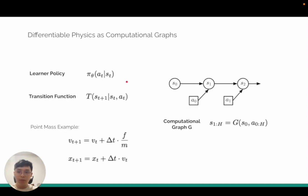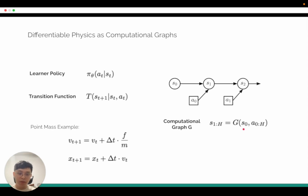Let's define the learner policy with pi theta which takes in st and outputs action at. The transition function t takes in current state st, action at and then outputs the next state st plus 1. Using the initial state and actions, we can use this transition function to output the next state. We can roll out a sequence of future states.